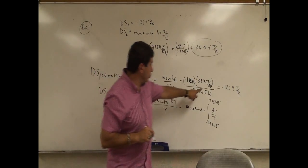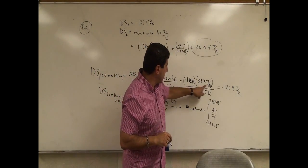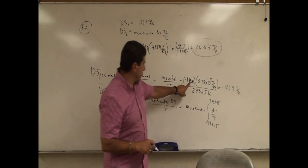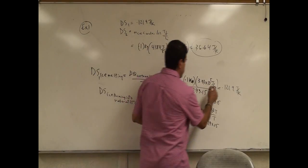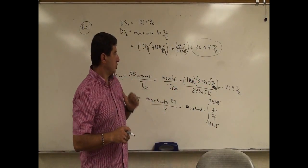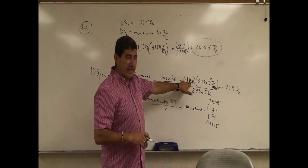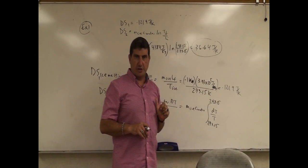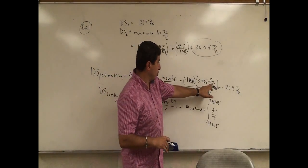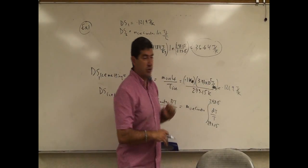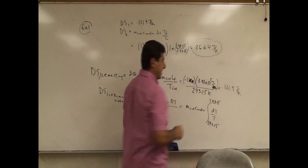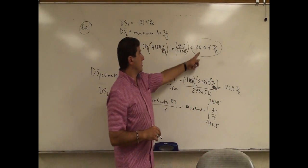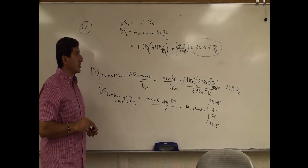I did make a mistake here — the units I gave were joules per gram, 333 joules per gram. In kilograms you're doing numbers like 3.33×10⁵. Make sure the kilograms cancel and it comes out to joules. So I could have kept the mass as 100 grams and used 333 joules per gram. The answers are 121.9 joules per Kelvin for melting, and 36.64 joules per Kelvin for the warming.